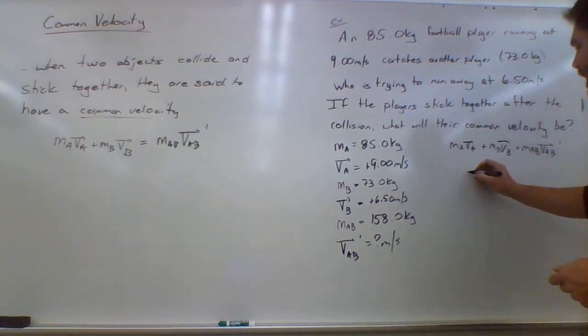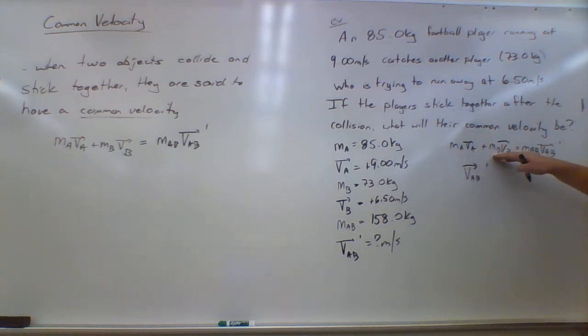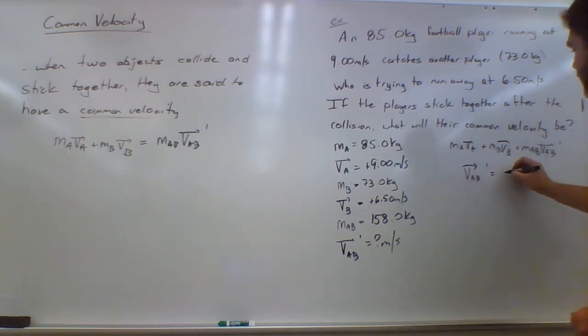So to find their common velocity, VAB prime, I'm just dividing this side of the equation by the mass that is common to the two of them. So MA VA plus MB VB over MAB.